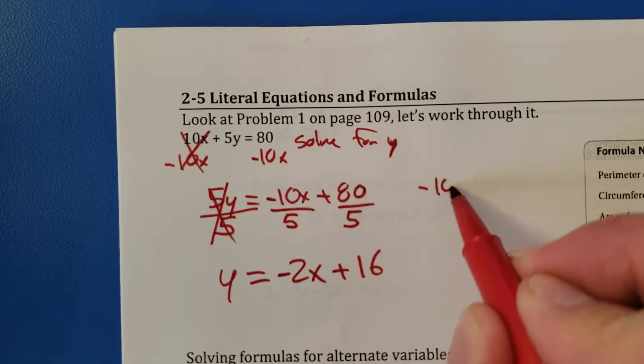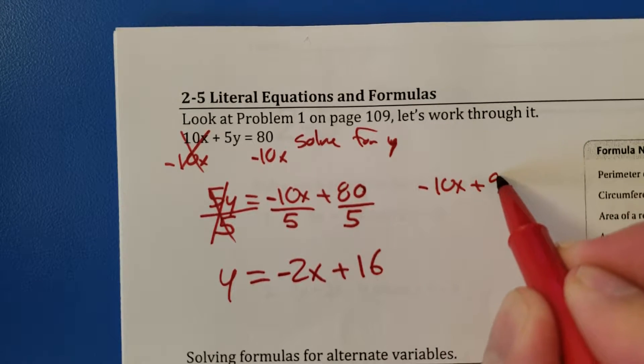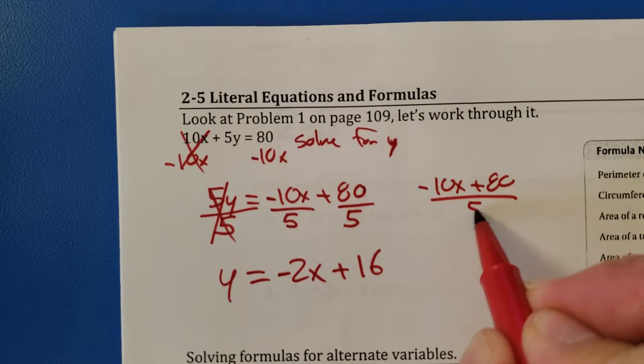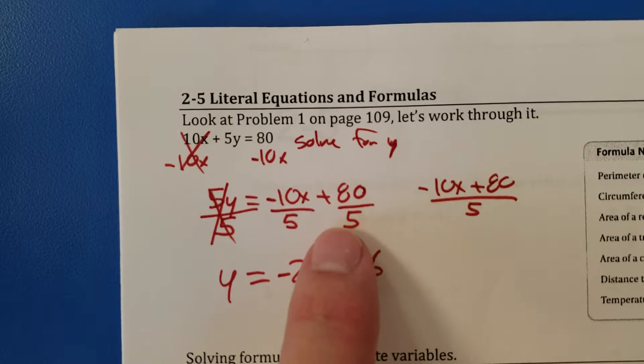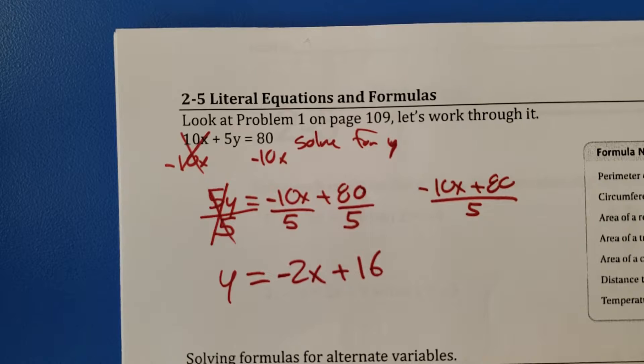I skipped this part. Technically, I should have wrote it like this. Okay. But when you divide a group by 5, it's the same thing as dividing them individually by 5.